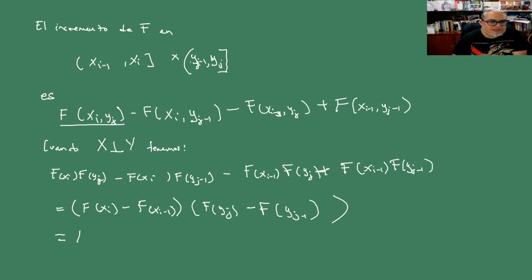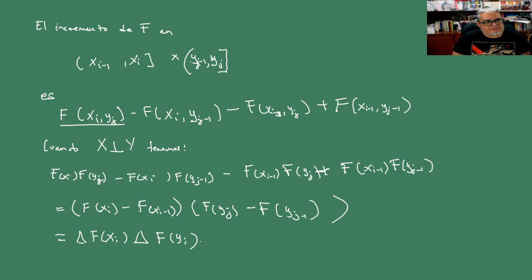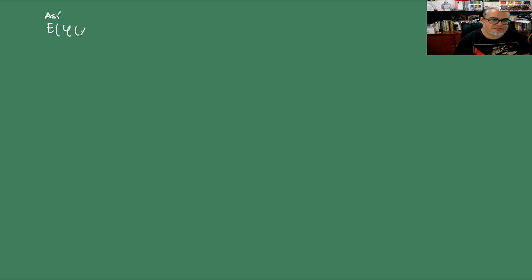Esto es el incremento de la distribución en términos de X_i multiplicado por el incremento de la distribución en términos de Y_j. Entonces, en el caso independiente, la integral de Riemann-Stieltjes en dos dimensiones la podemos separar como producto de dos integrales. Podríamos reescribir la esperanza de φ(X,Y) como la integral sobre todo R² de φ respecto de la distribución en X y de la distribución en Y.